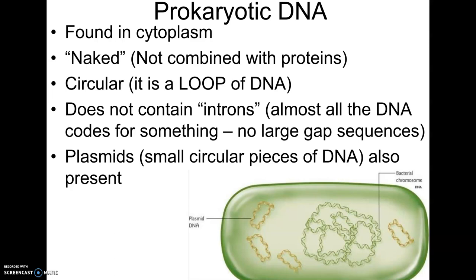Prokaryotic DNA also does not contain what are called introns. Think of our DNA like a novel, and bacteria DNA more like the cliff notes — everything in the bacterial DNA is important. Whereas eukaryotic DNA is like a novel with extra fluff, chapters that aren't really necessary. It has segments called introns that don't seem to code for anything — they could be spacers or leftovers from our ancestors, and we're still learning about them. They're basically gap sequences of DNA that are not actual genes.